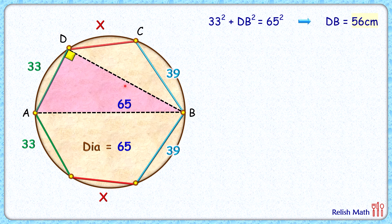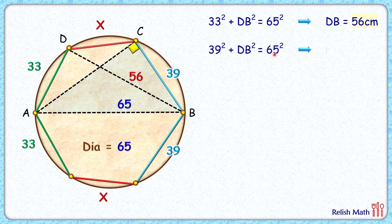Same way, let's join AC here. AB is the diameter, thus angle C is 90. In this blue triangle applying Pythagorean theorem we'll get 39 squared plus AC squared equals 65 squared. Solving it will get the length of AC as 52 centimeters.